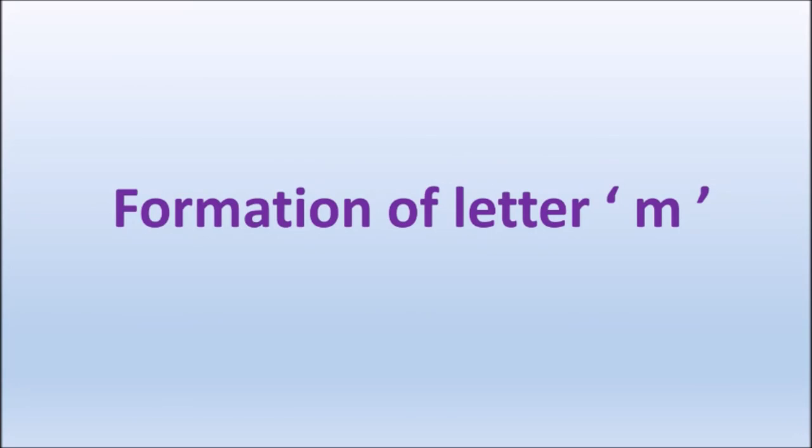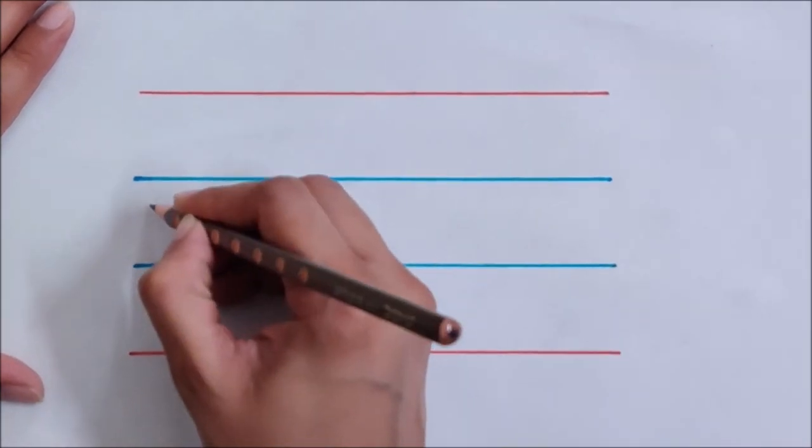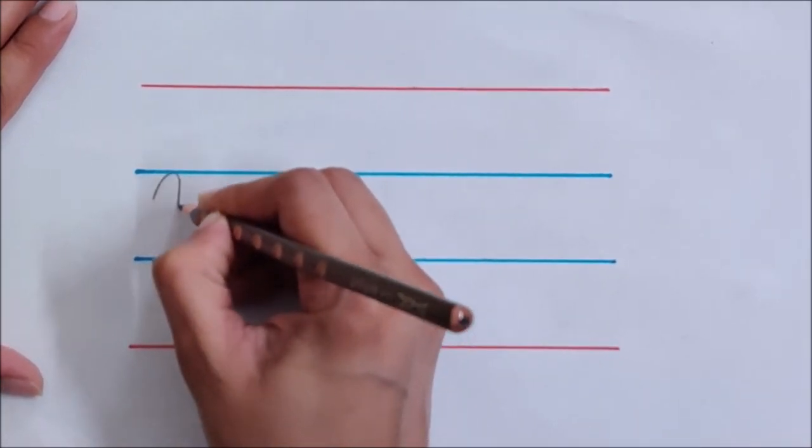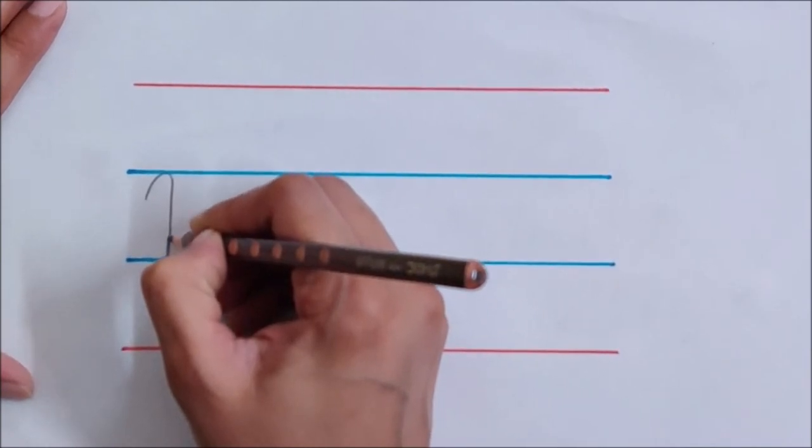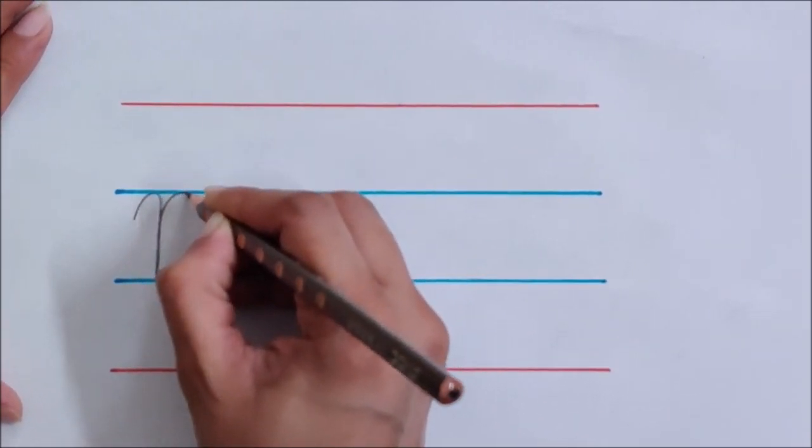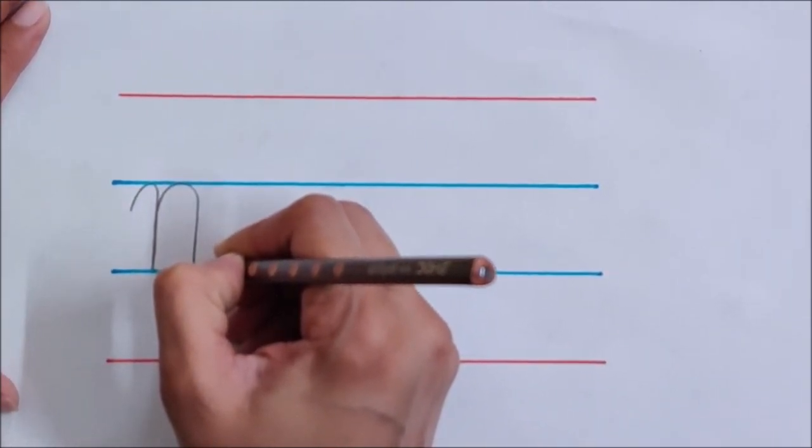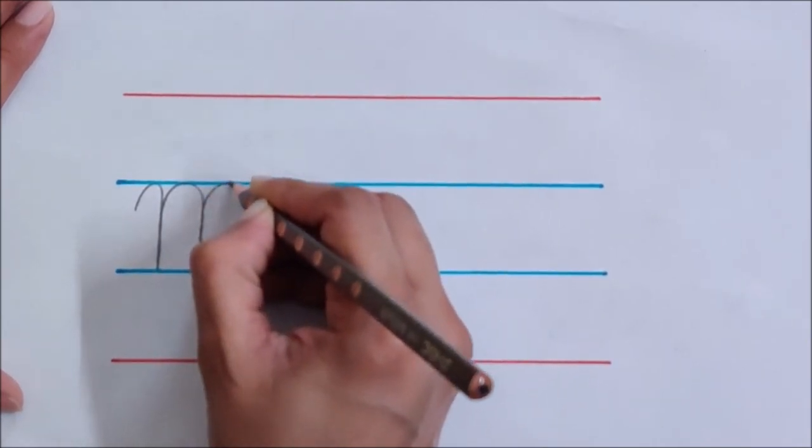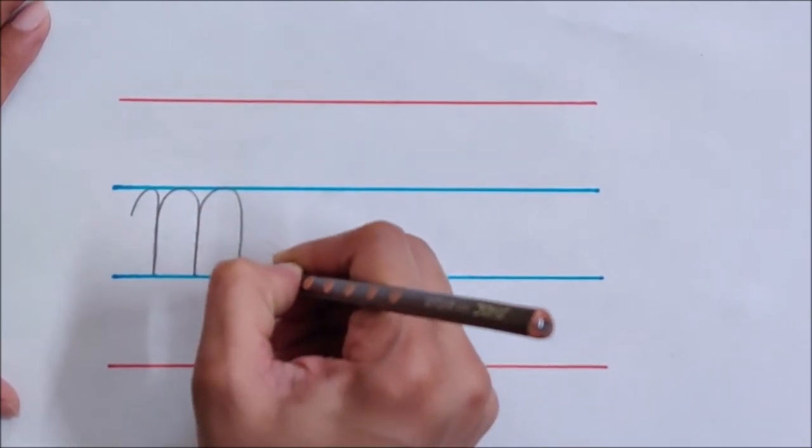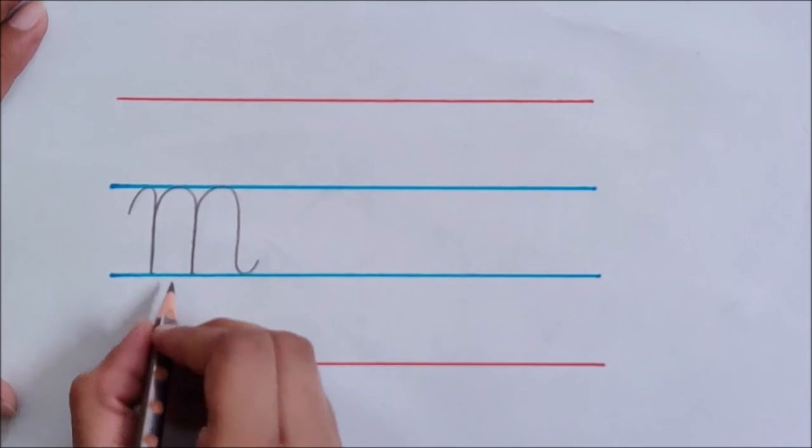Now children, it is time to see the formation of letter M. You have to go up, come down, then come up on the same line. Down, then again up, down and a tail. This is M-M.